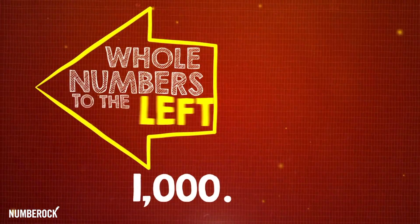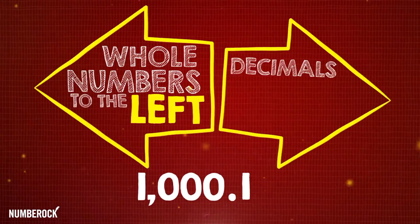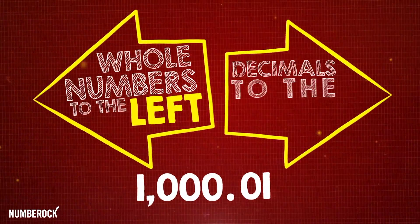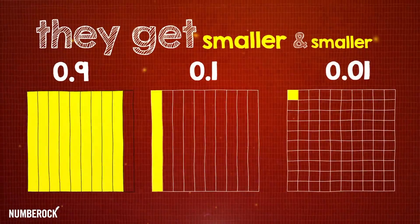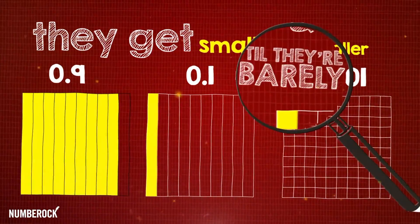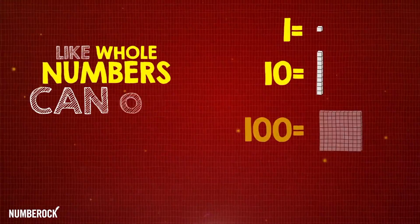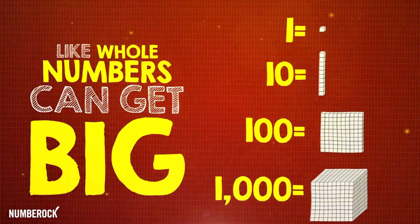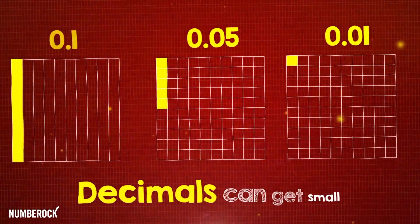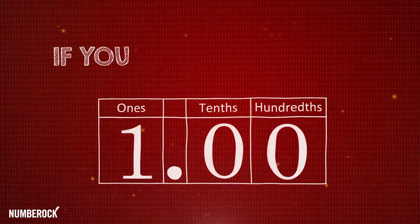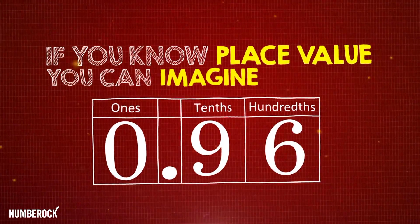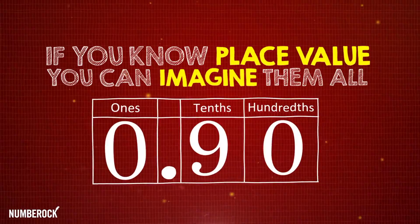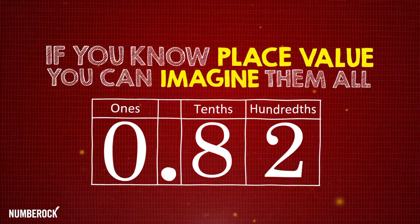Whole numbers to the left, decimals to the right — they get smaller and smaller till they're barely inside. Like whole numbers can get big, decimals can get small; if you know place value, you can imagine them all.